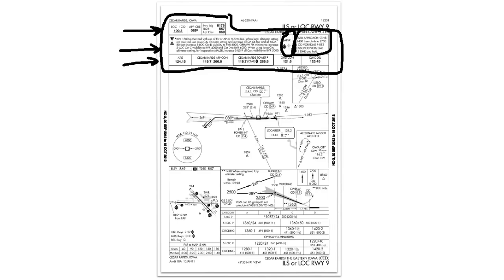The frequencies are laid out in a nice easy-to-follow order in the order of use. First you have your ATIS, then your approach control or center frequency if there's no approach control, tower or CTAF, ground control if it's at the airport, and clearance delivery again if it exists at the airport of landing.